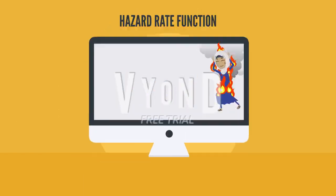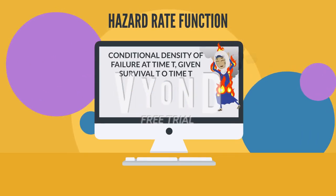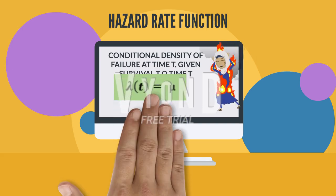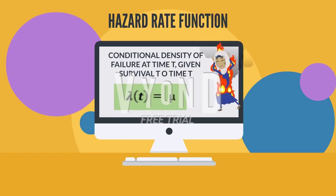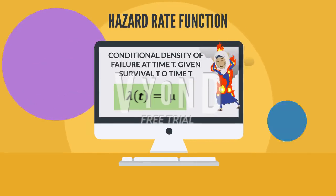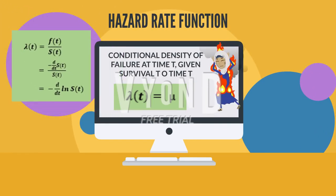The hazard rate function is the conditional density of failure at time t, given survival to time t. The hazard rate is normally called the force of mortality. We can conclude that the hazard rate equals the force of mortality. Thus, the hazard rate equals the unconditional density of failure at time t, divided by the probability of survival to time t.